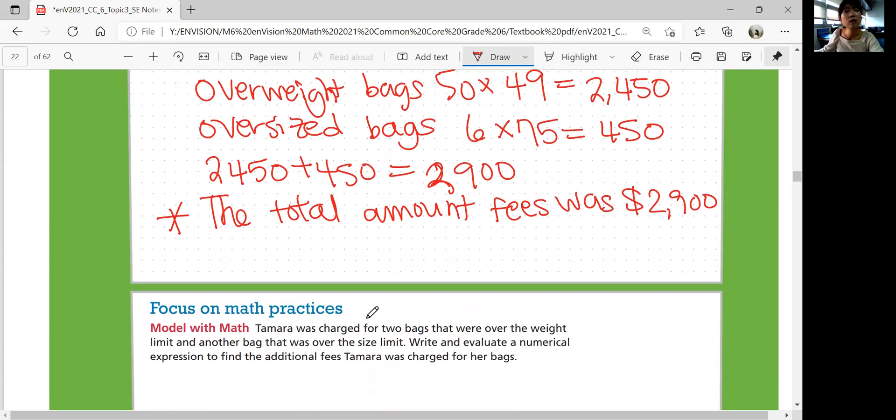Look at the problem on the bottom. Tamara was charged for two bags that were over the weight limit and another bag that was over the size limit. So two bags. Write and evaluate a numerical expression to find the additional fees Tamara was charged for her bags. So she got two bags that were over the weight limit, which is $49 each plus total weight.